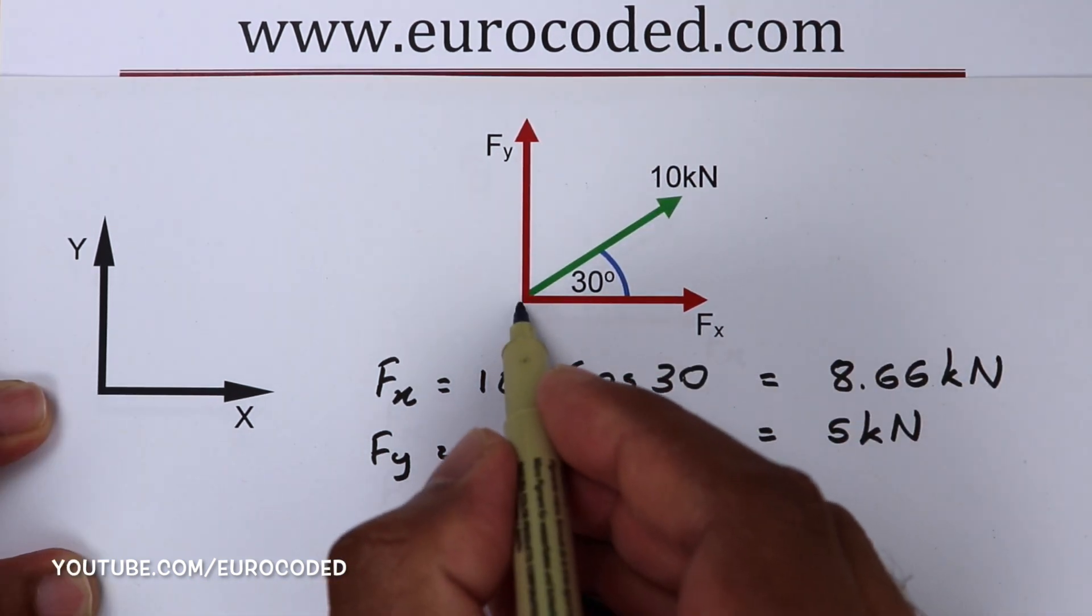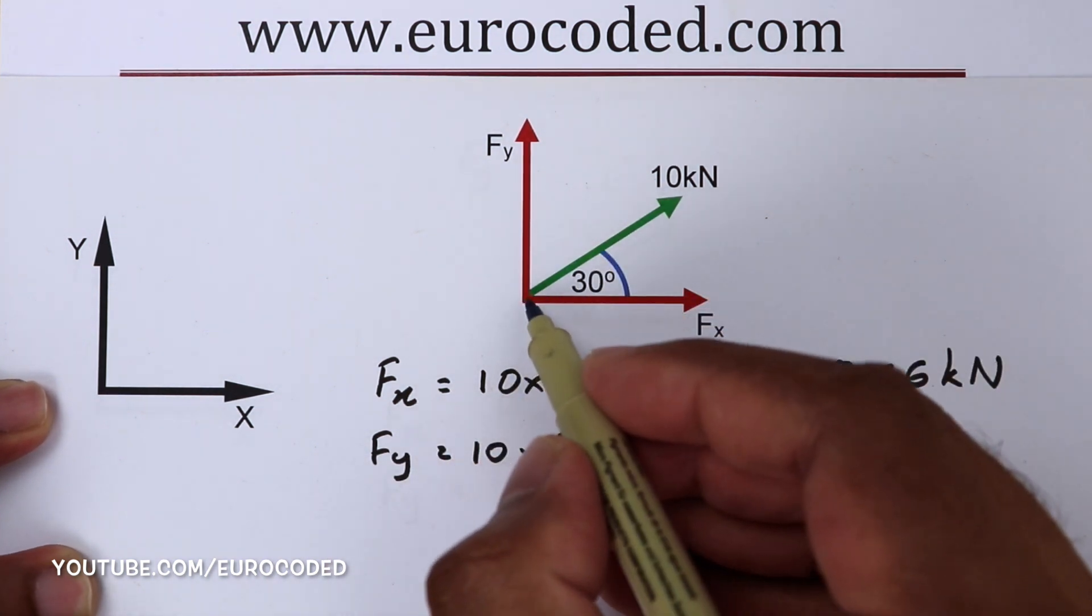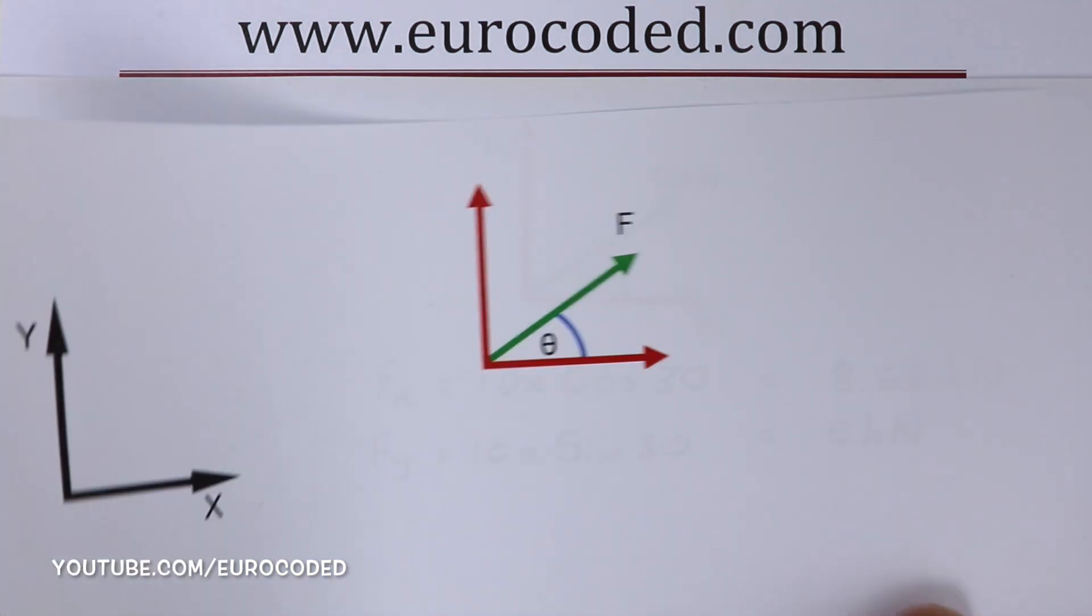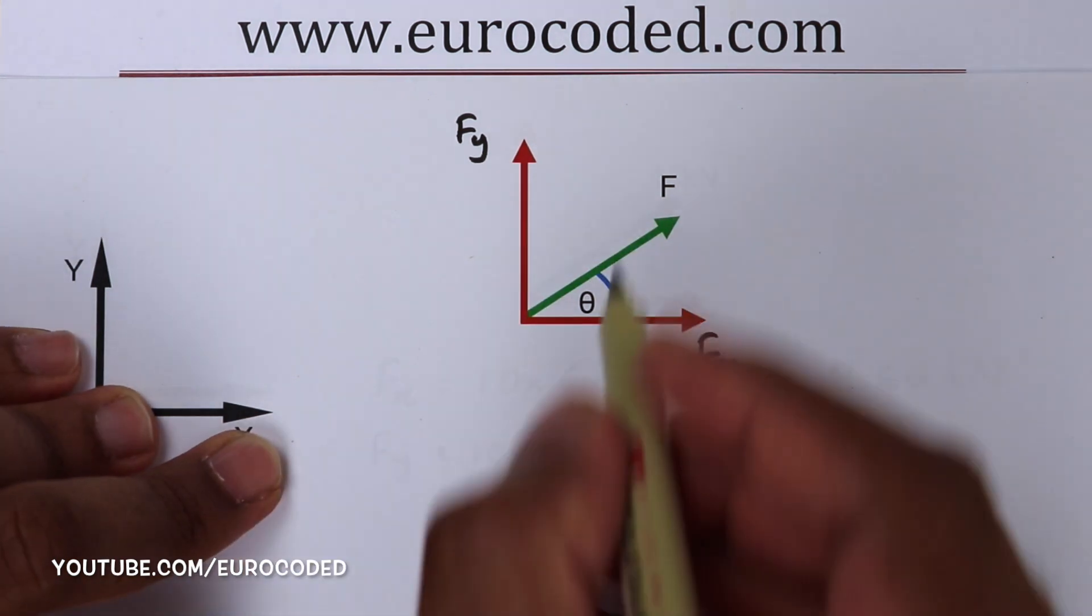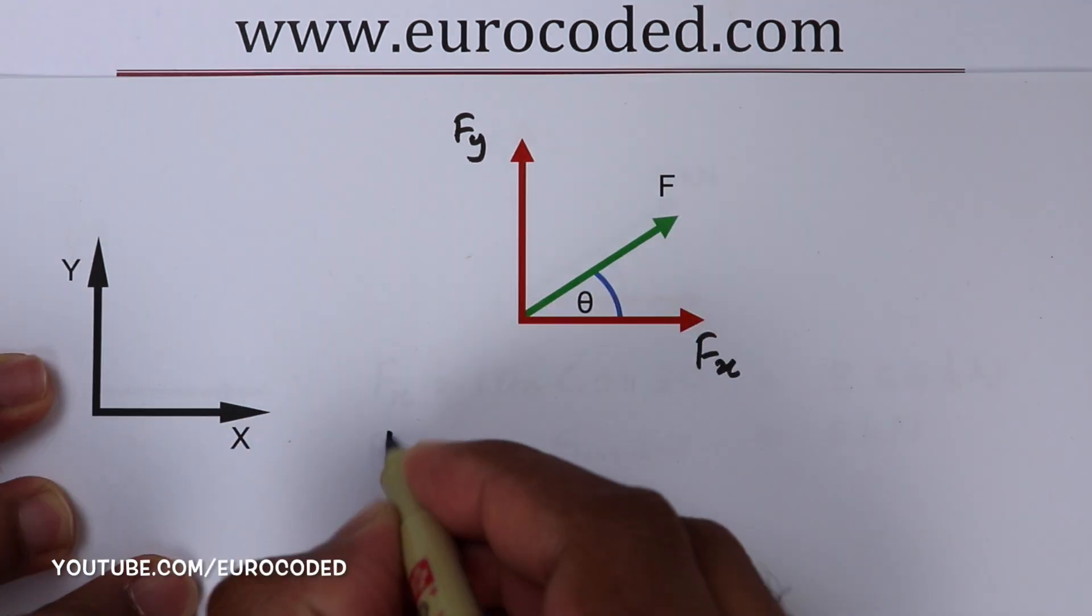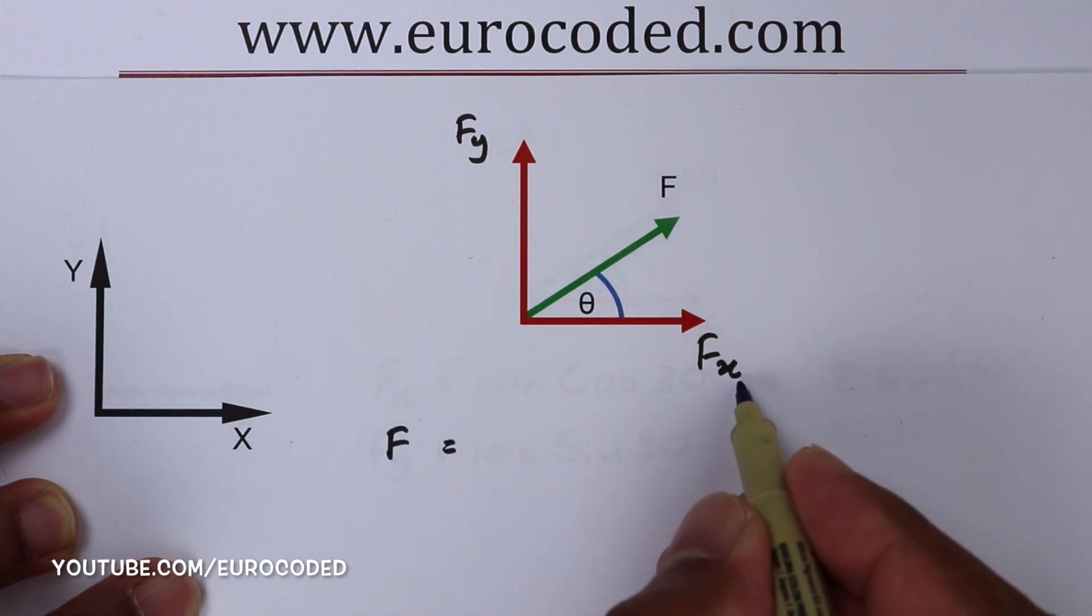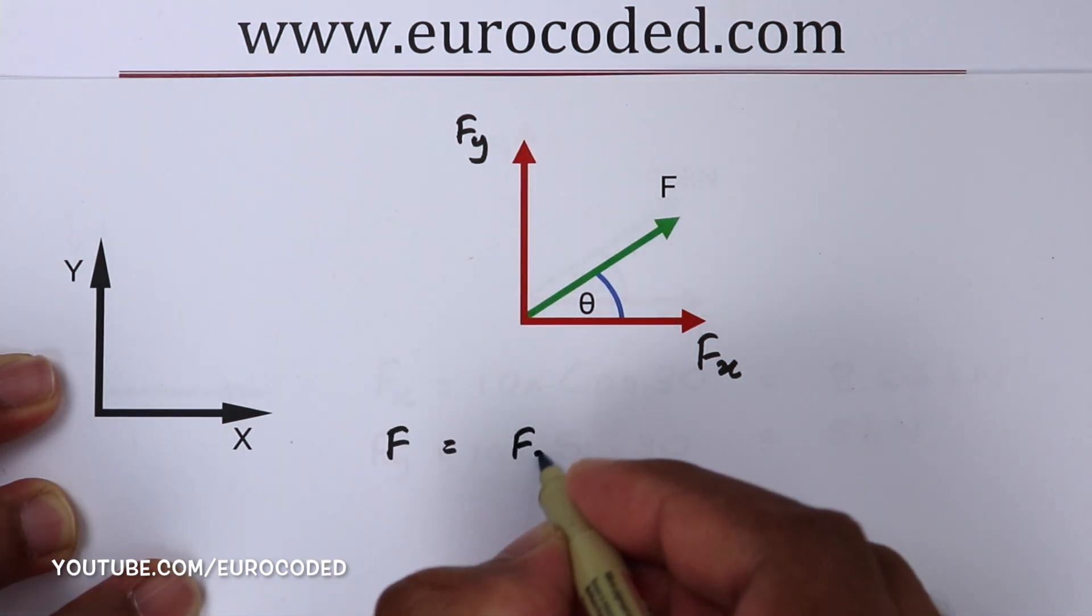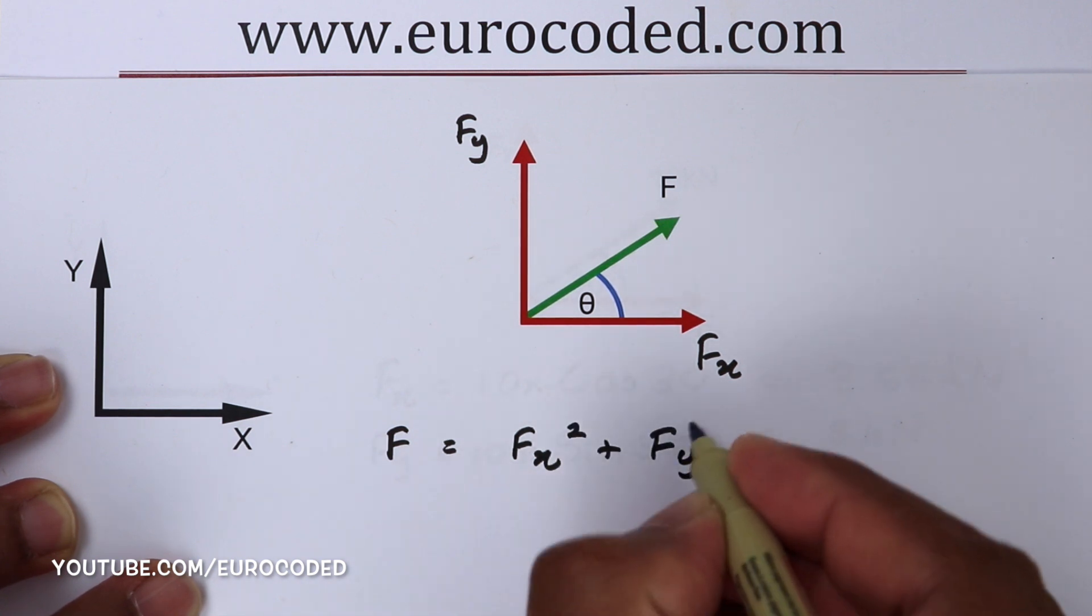Conversely, when we know the magnitude of these rectangular components, then we can find the resultant force by using the Pythagorean theorem. Therefore, if Fx and Fy are known, then we can find the resultant force F. The resultant force F is equal to the square root of Fx squared plus Fy squared.